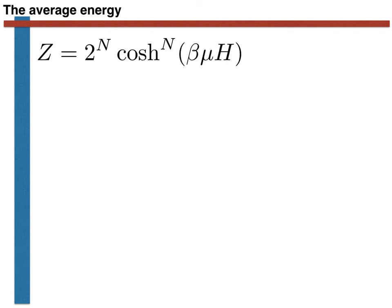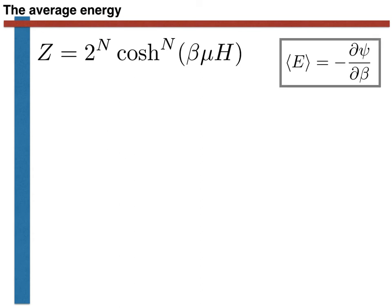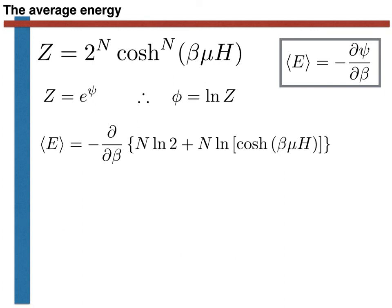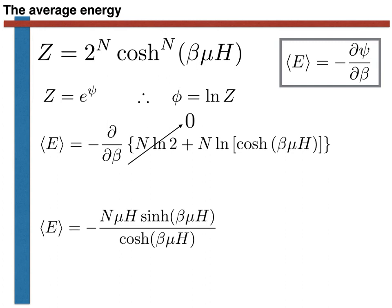To derive this expression, we recall that the ensemble average of the energy is equal to minus the derivative of psi with respect to beta, and that psi is equal to the logarithm of the partition function. When we insert our expression for the partition function and perform some simple manipulations using the logarithm, we find the derivative we have to calculate. The first term is a constant, so its derivative is zero. The derivative of the second term can be found by exploiting the chain rule and what we know about the derivatives of the logarithm and the hyperbolic cosine. The final result can be simplified by remembering that sinh divided by cosh gives the hyperbolic tangent, yielding the average energy as shown here.